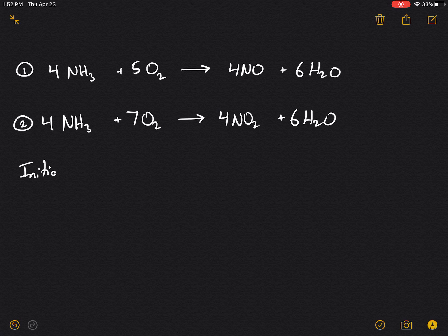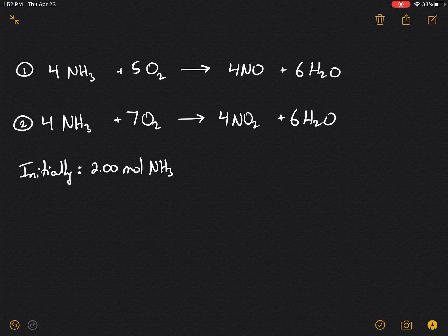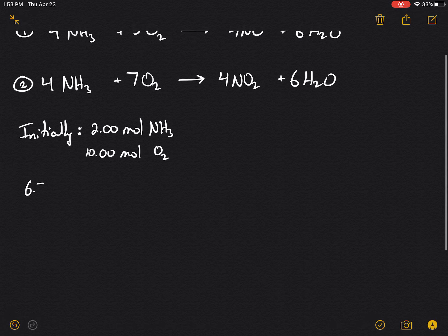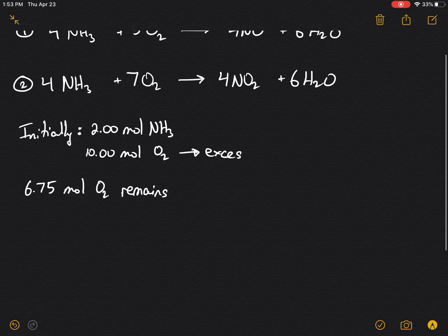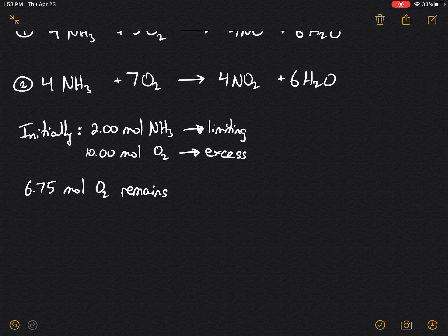So initially, we have 2 moles of NH3 and 10 moles of O2. Now we're told that 6.75 moles of oxygen remains. So if oxygen remains, then oxygen must be present in excess. NH3 must be the limiting reagent.